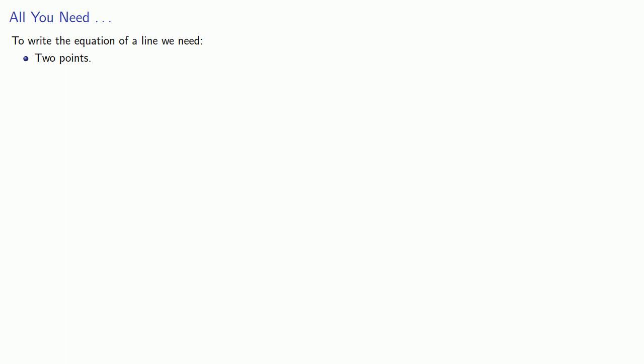But actually, the first thing that we do when we have those two points is to find the slope of the line, and so what we really need to write the equation of a line is one point and the slope. And as soon as we have that, we can write the equation of the line in point-slope form.